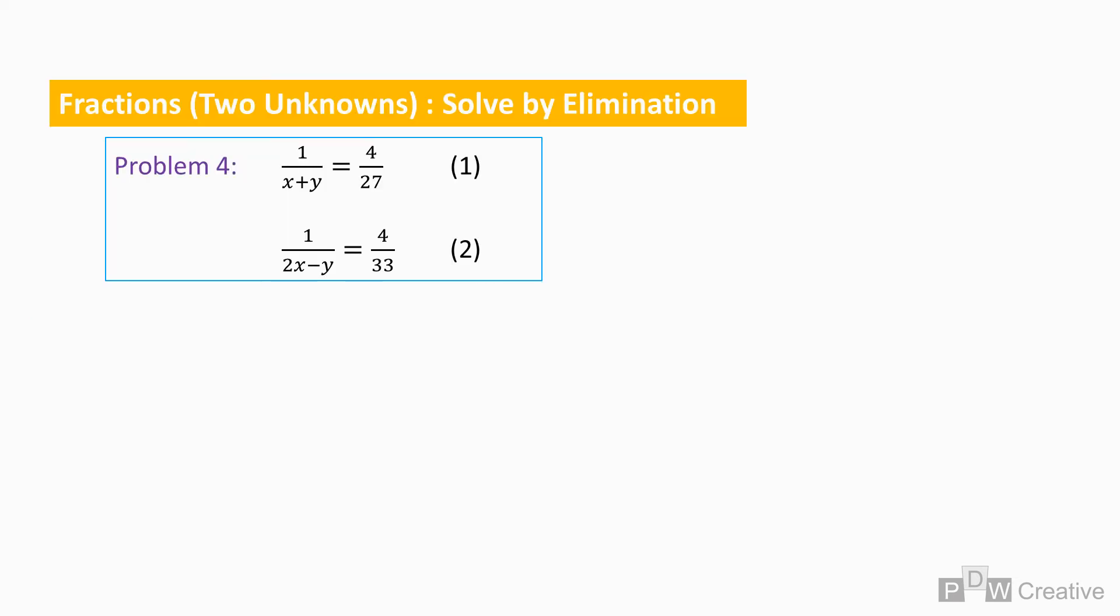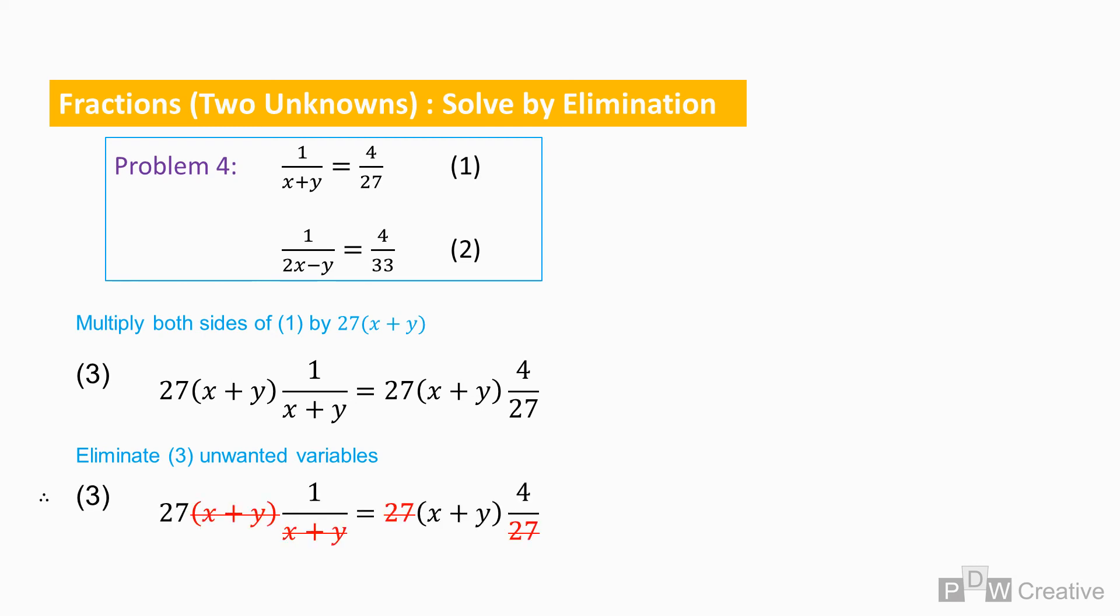For problem four, simplification is required as the unknowns present themselves as part of fractions. Focusing on equation one, if we were to multiply both sides by 27 times x plus y, the equation is expanded as shown in equation three. We can perform this action as long as we add to both sides. But whatever we add, it must then help us to begin the elimination process. We can eliminate variables that cancel each other out on both sides of the equation as shown, and this gives us a much more familiar looking equation to use later in the solution.